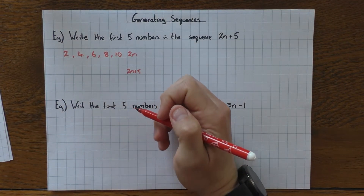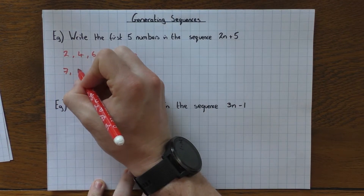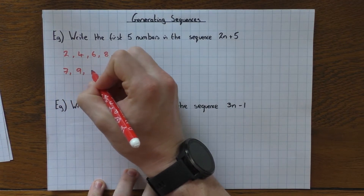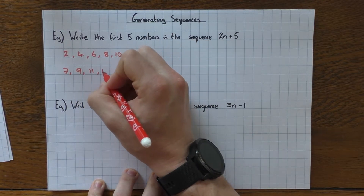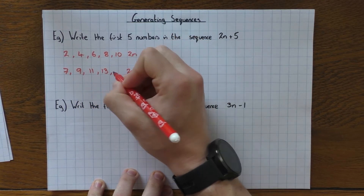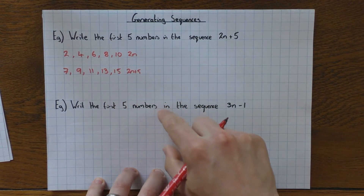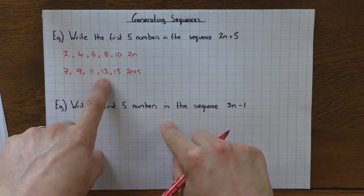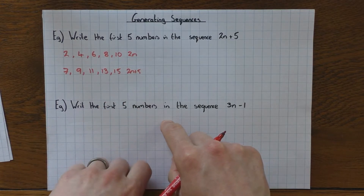So to get 2n plus 5, I'll add 5 to all of those numbers. So 2 add 5 gives me 7, 4 add 5 is 9, 6 add 5 is 11, 8 add 5 is 13, and 10 add 5 is 15. And then that would be your answer: 7, 9, 11, 13, and 15.